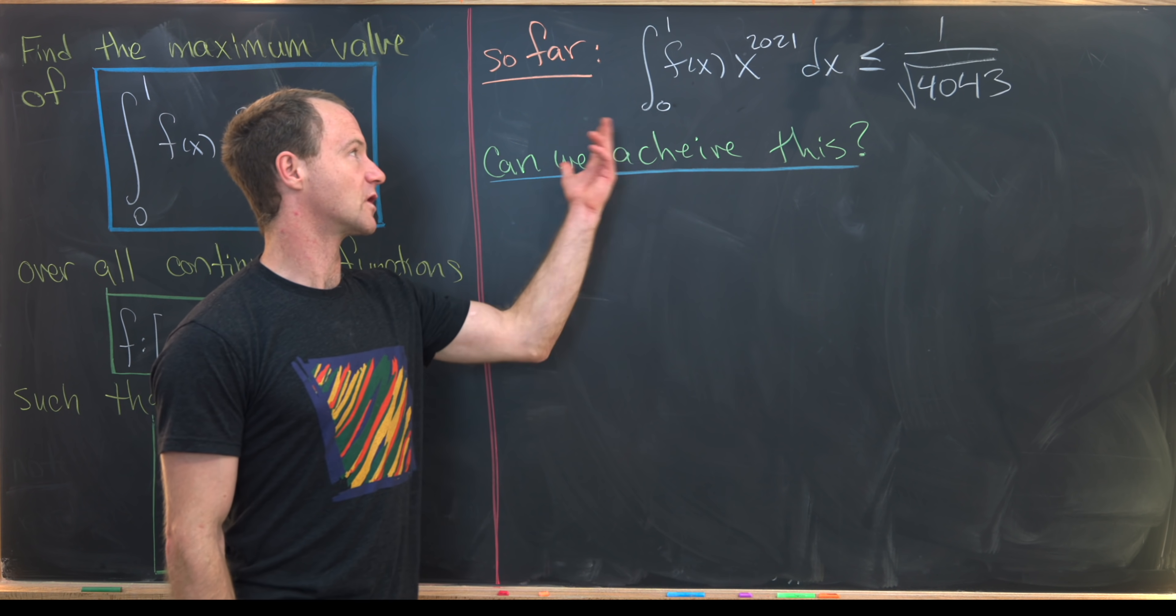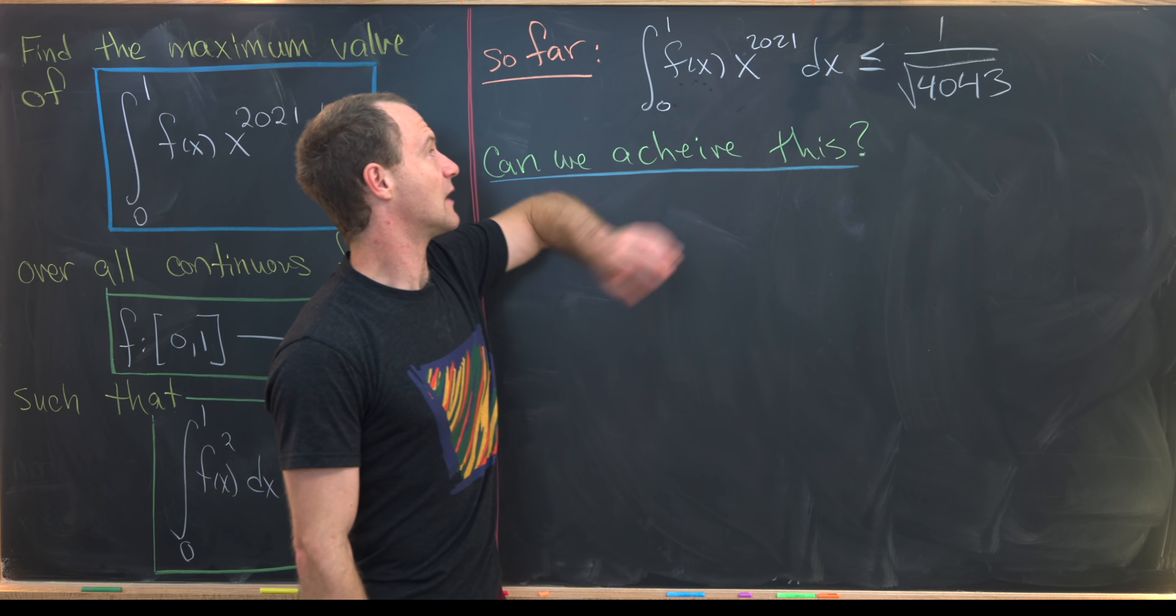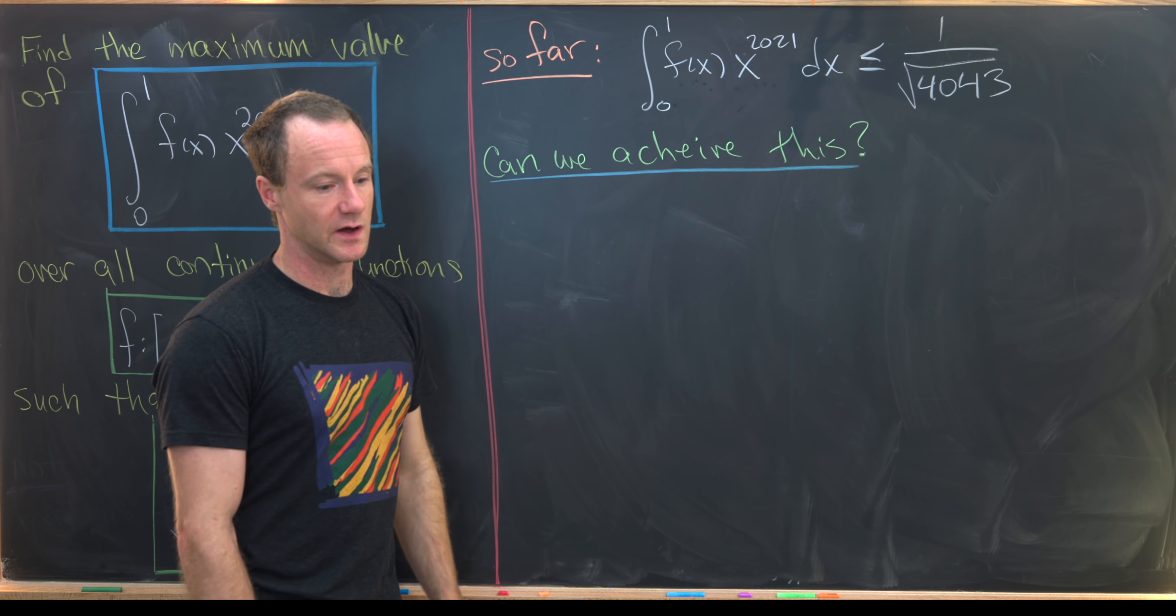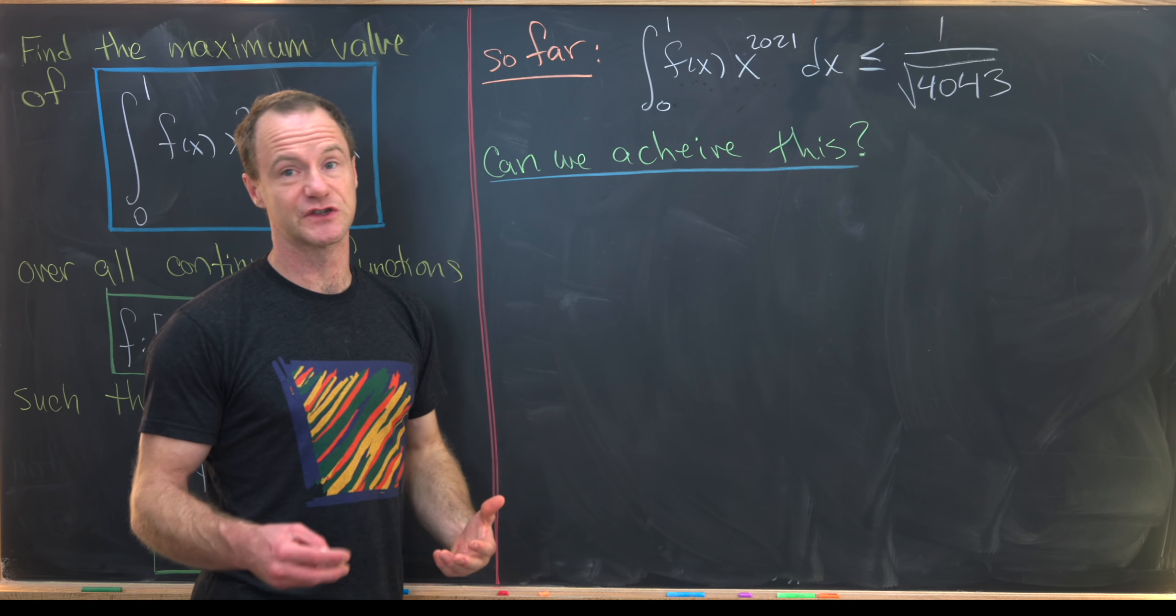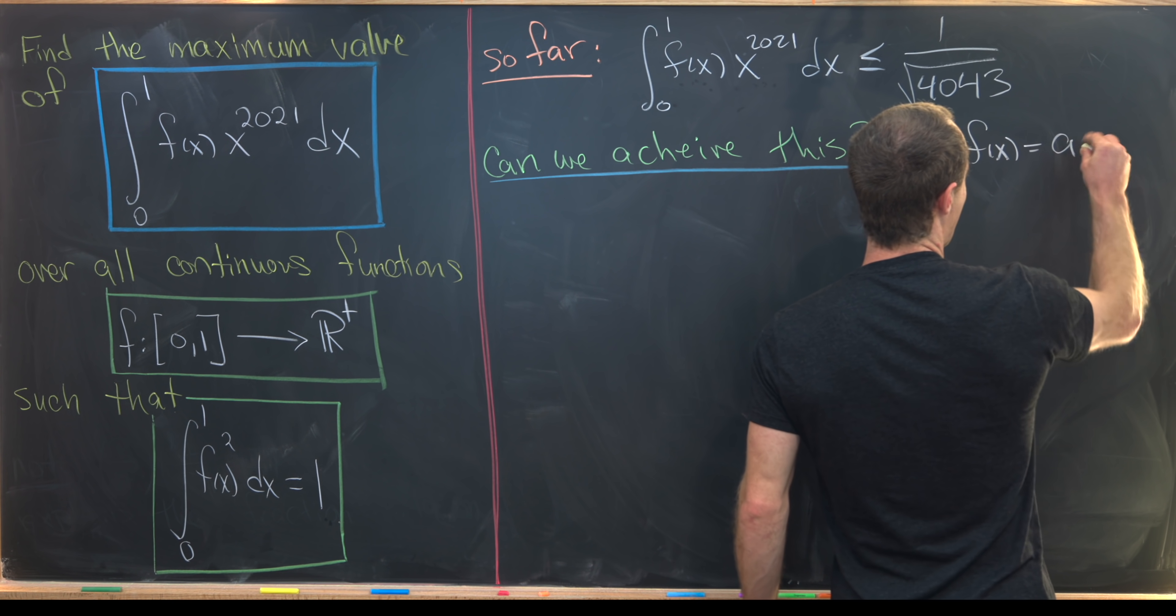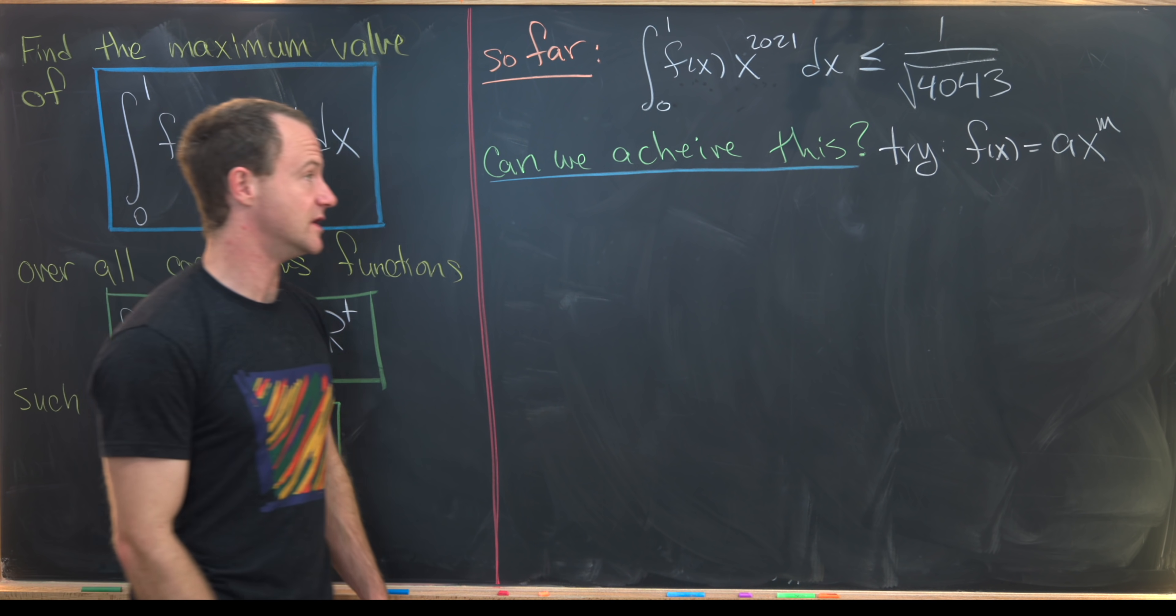But luckily for us, we're able to find this function. The first place to look for anything like this is a function that really works well with the other parts of this integral. Notice we've got a power function here, x to the 2021. So a good starting guess would be that f is also a power function. So let's just go ahead and try that. We'll try f(x) equals a times x to the m. Well, now we've got a system of two equations and two unknowns.